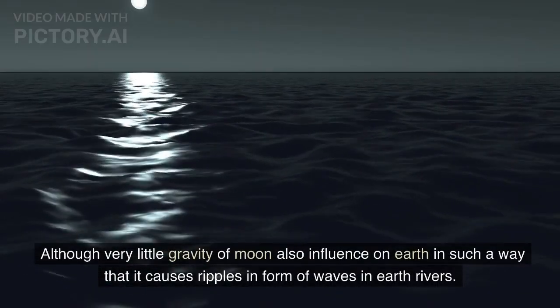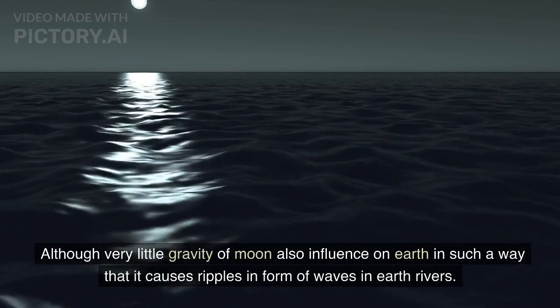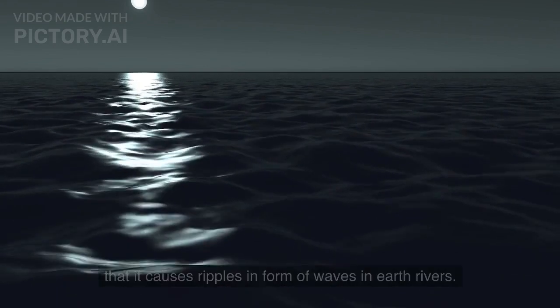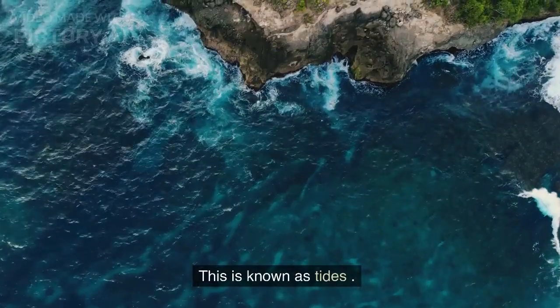Although the moon's gravity also influences Earth in such a way that it causes ripples in the form of waves in Earth's rivers and oceans. This is known as tides.